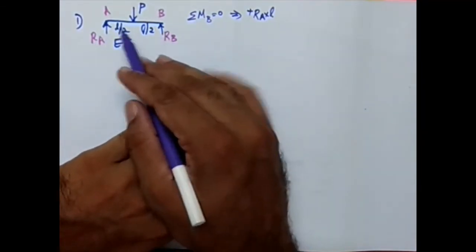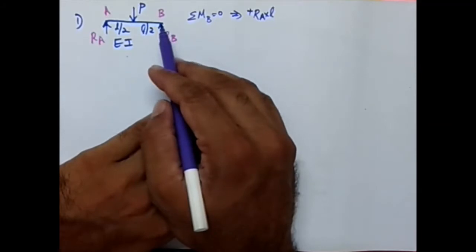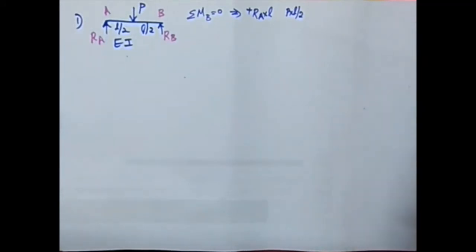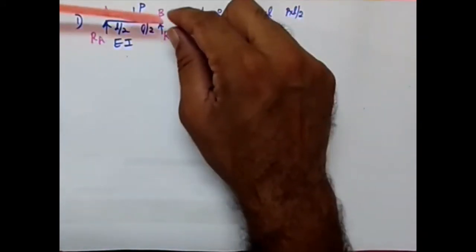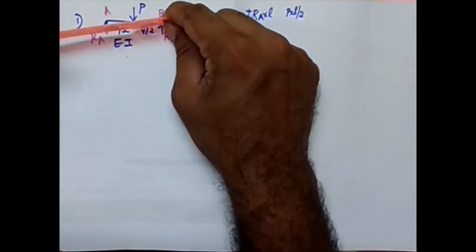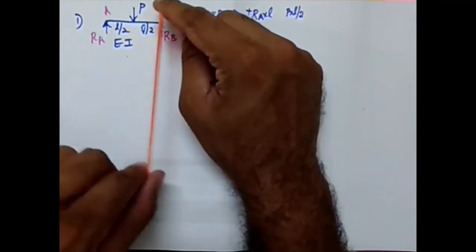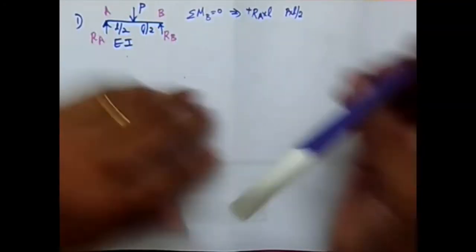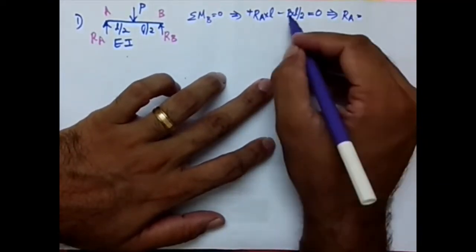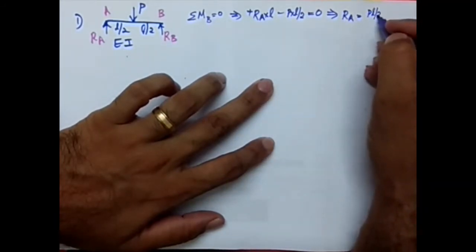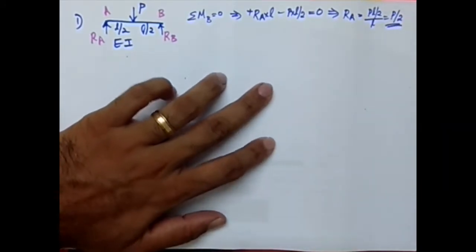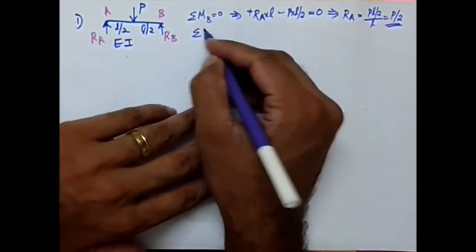The other force is P acting at a distance of L/2, so we have P times L/2. To determine its direction, apply it at that point — it rotates anti-clockwise, so it is minus. Setting equal to zero: RA times L minus P times L/2 = 0, giving RA = PL/2 divided by L, which is P/2.